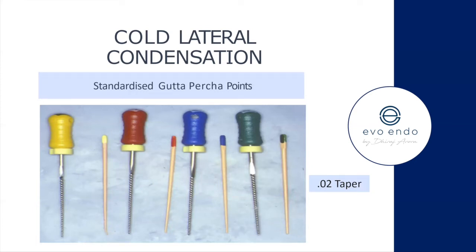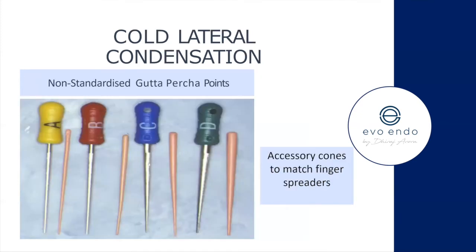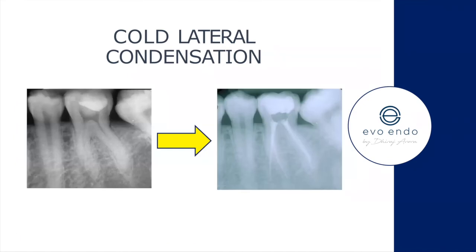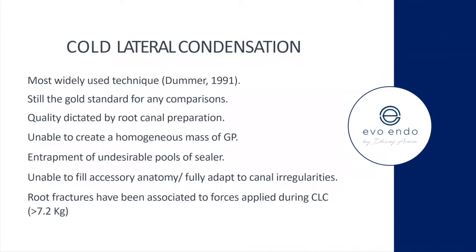ISO standardized GP points are 0.02 taper. You can get non-standardized GP points matched to your finger spreaders, and also 0.04 or 0.06 taper GP points — whatever you use, make sure it matches what you have. Excellent results can be achieved with lateral condensation. To this day it's still the most widely used technique and still the gold standard against which any new obturating technique is compared.